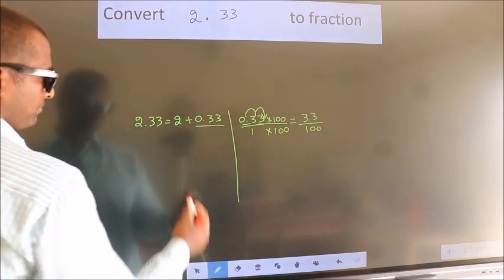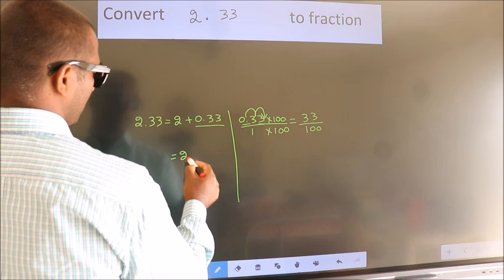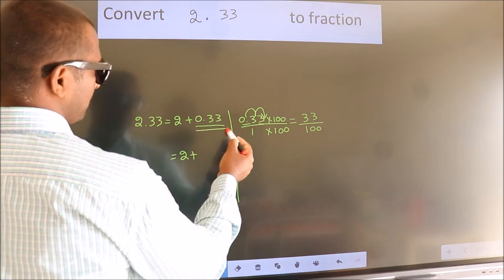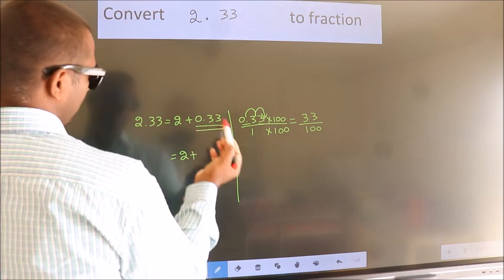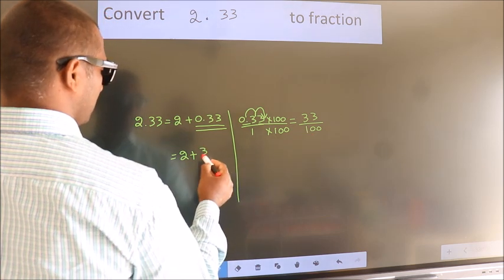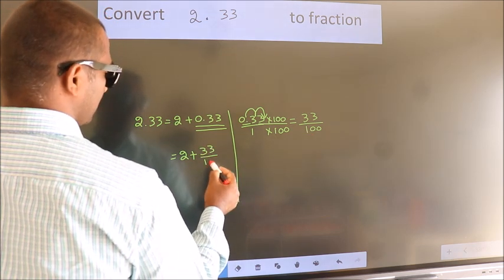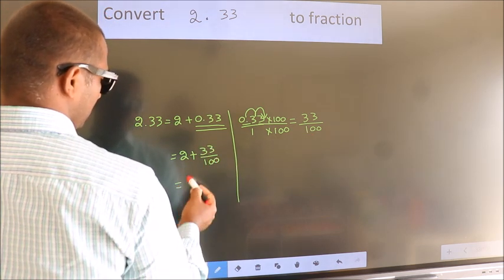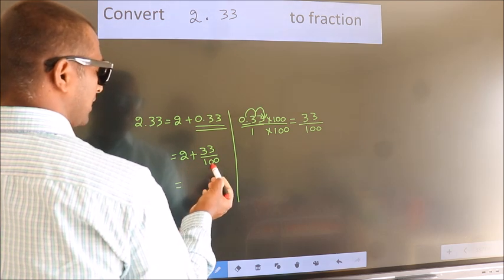Now here, 2 plus in place of 0.33, we write this fraction. 33 by 100.